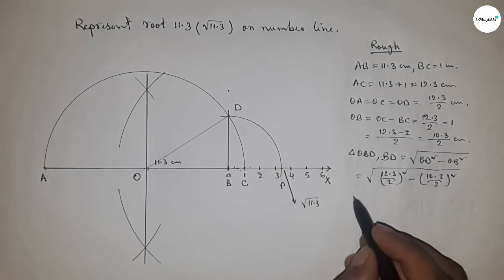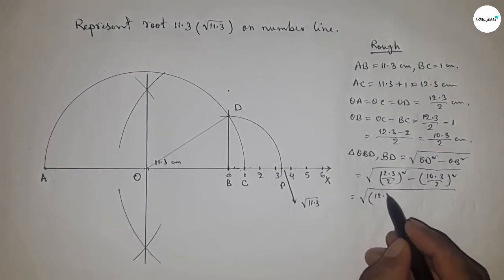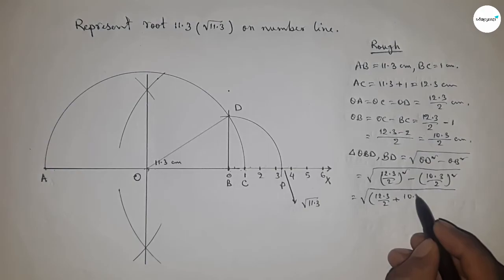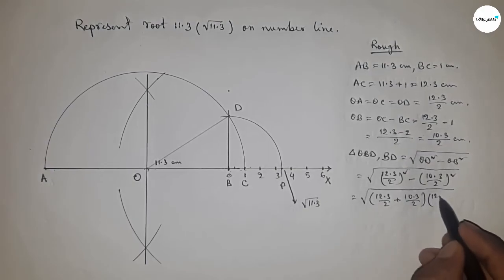Next, I am going to use a formula: a square minus b square equal to a plus b times a minus b. So here applying the formula first.